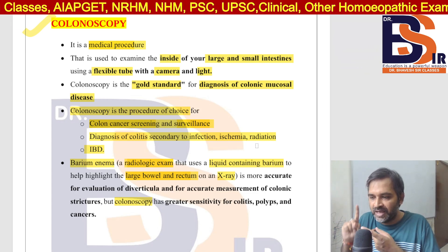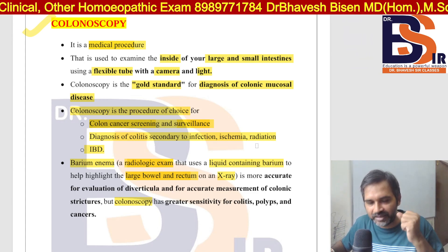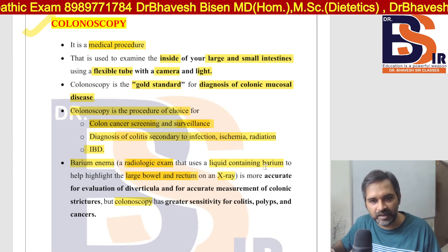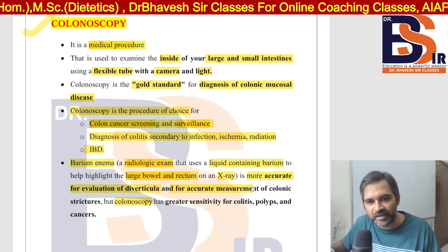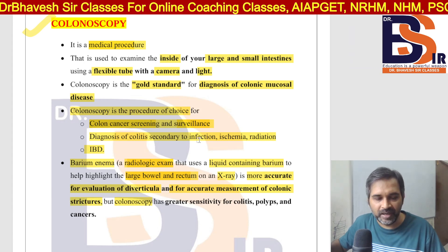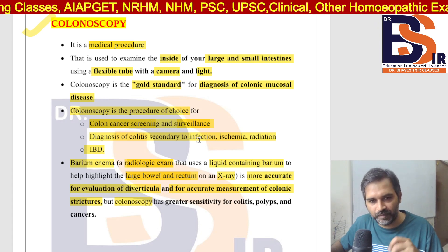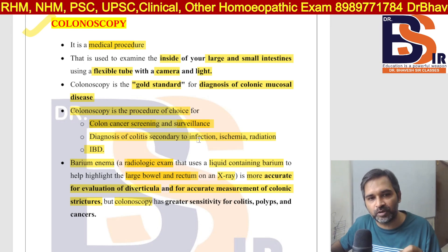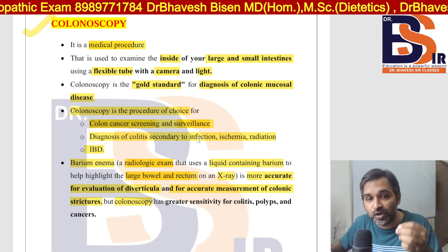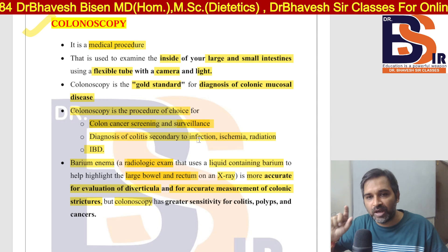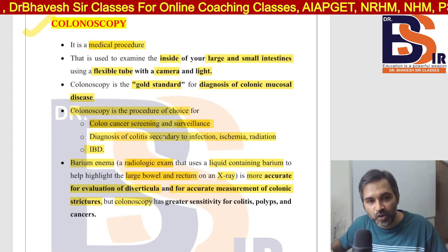In barium enema, barium is used — when barium is exposed to X-ray light, it produces a glow, and using this technique you examine the large intestine and rectum. Barium enema is more accurate for evaluation of diverticulum and for accurate measurement of colonic structure.